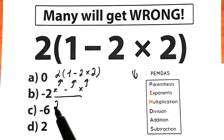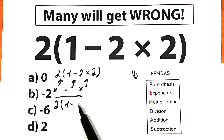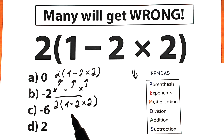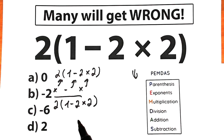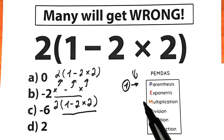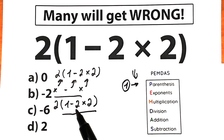Let's solve our challenge according to PEMDAS. Here's our challenge: 2 times (1 minus 2 times 2). Let's scan our challenge — what do we have? We have a multiplication sign, a subtraction sign, a multiplication sign, and we have parentheses. Our first step: we should find the parentheses and evaluate the expression inside. Inside the parentheses we have a multiplication sign and a subtraction sign.